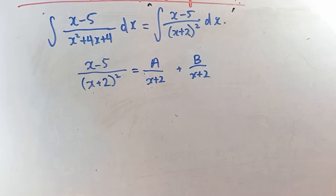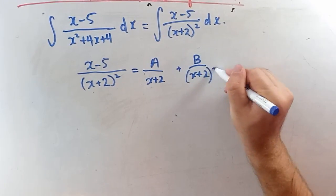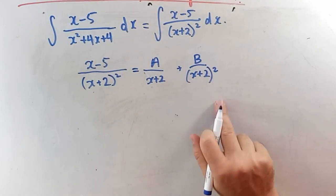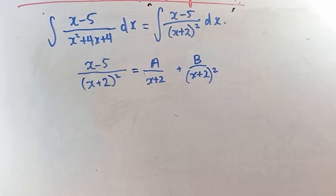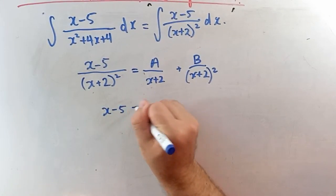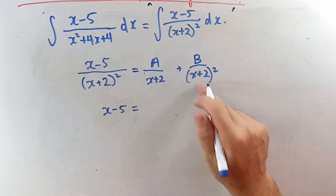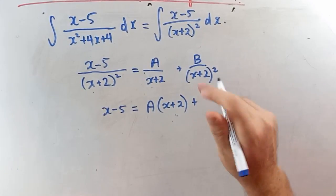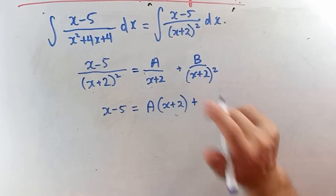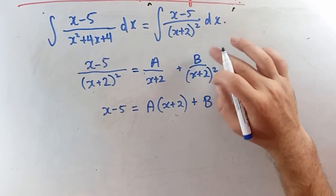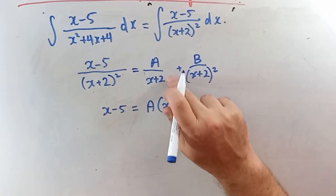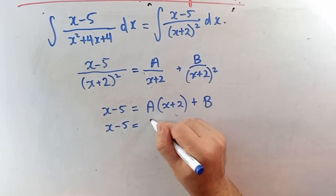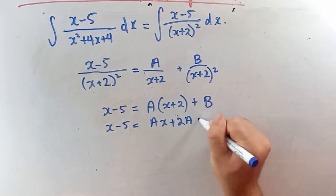With a repeated factor, you might be tempted to write a over x plus 2 plus b over x plus 2, but that doesn't work. You need one factor to be squared: a over x plus 2 plus b over (x plus 2) squared. To find the numerators, multiply through: x minus 5 equals a(x plus 2) plus b.